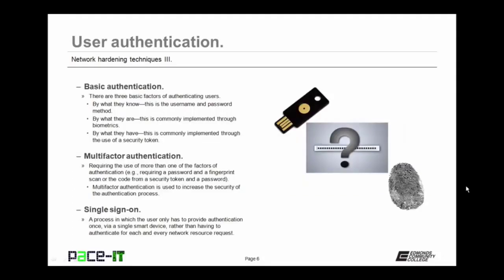There are three basic factors for authenticating users. By what you know — this is the username and password method. By what you are — commonly implemented through biometrics. And by what you have — commonly implemented through the use of security tokens. You can combine these in a process called multi-factor authentication — requiring the use of more than one factor, such as requiring a password and a fingerprint scan, or the code from a security token and a password.